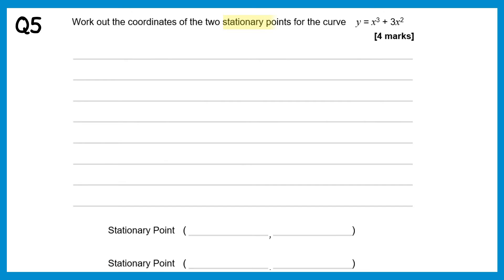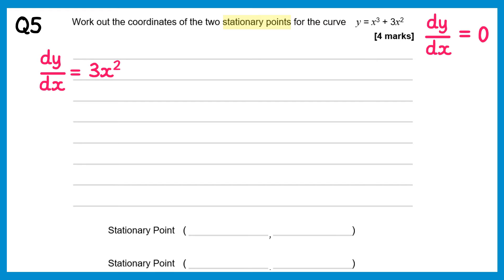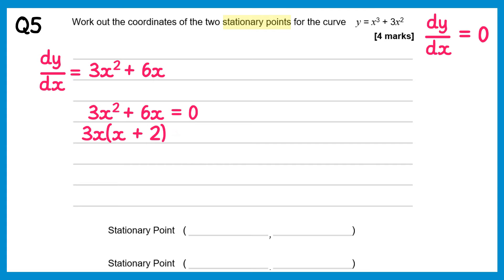We need to find the coordinates of two stationary points this time. Again dy/dx must equal 0 at stationary points. Differentiating x³ gives 3x² and differentiating plus 3x² gives plus 6x. Setting 3x² + 6x equal to 0, we factorise 3x out to get 3x(x + 2) = 0. This gives x equals 0 and x equals negative 2.